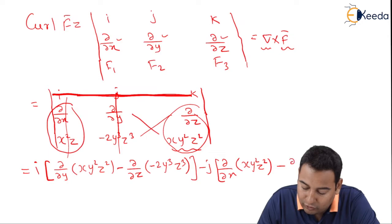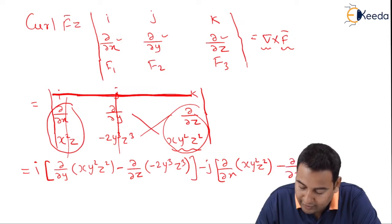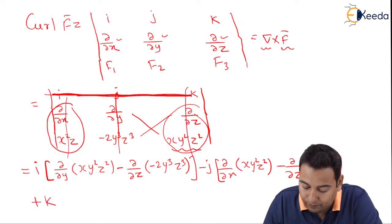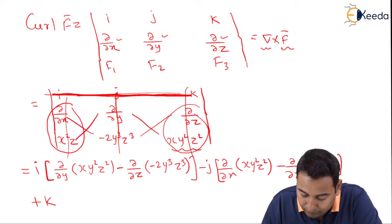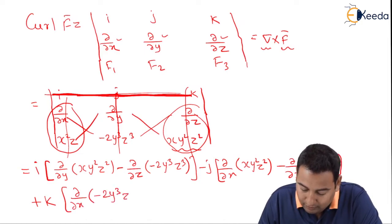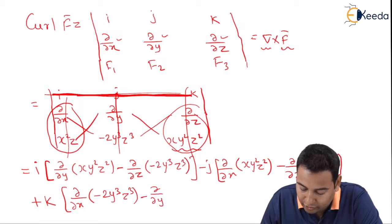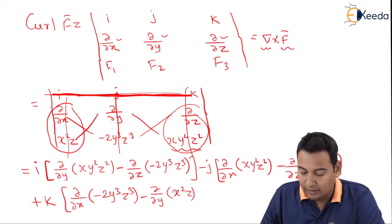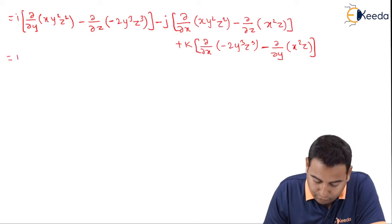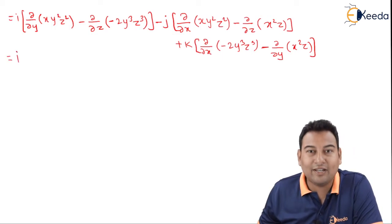Finally, plus k: leave this column and this row, cross multiply — that is ∂/∂x of (−2y³z³) minus ∂/∂y of (x²z). I need to simplify this to get the result.